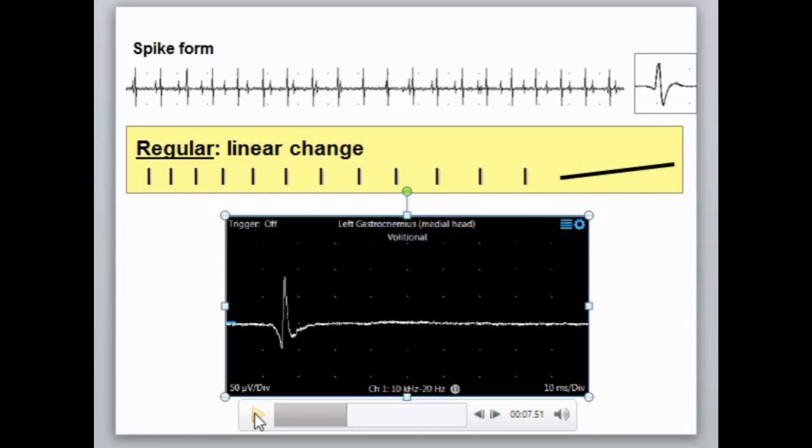I would caution you to be careful about over-interpreting irregular firing spikes. In most cases, those are going to be end-plate spikes. But in the right clinical context, when seen in multiple areas of the muscle in early denervating processes, fibrillation potentials may fire irregularly.